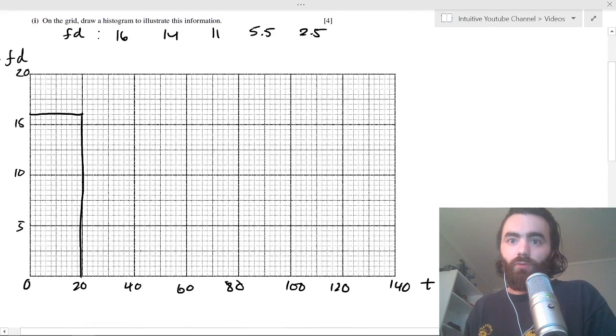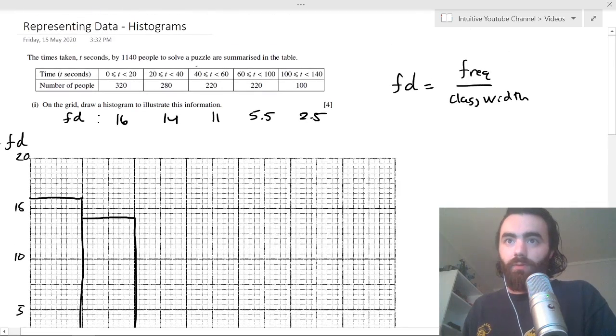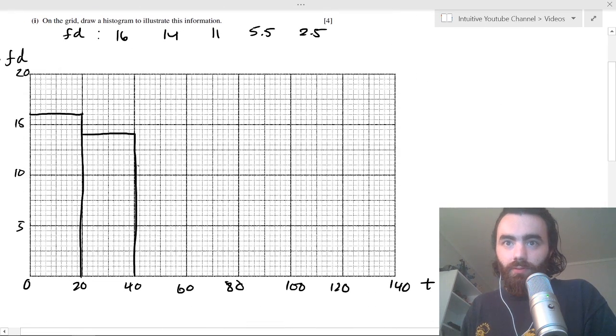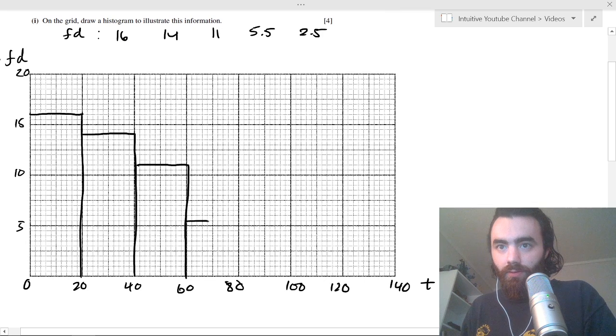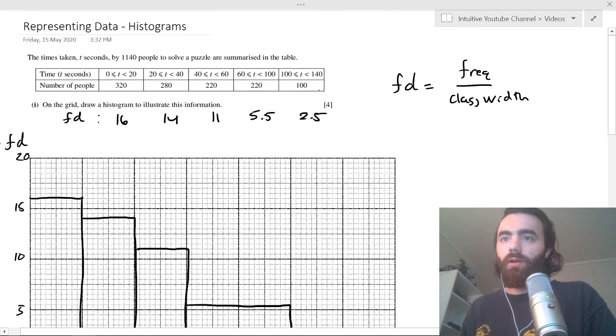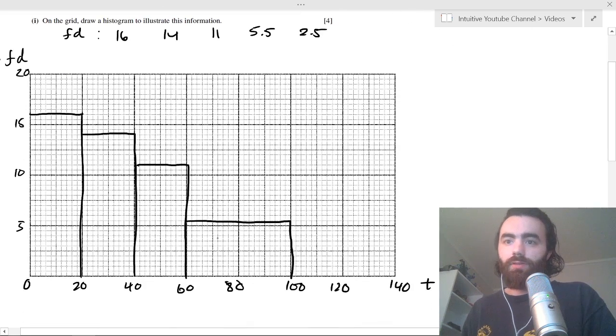And I picked 0.5 because I had 0.5 as my smallest thing here. So the next one will be for 14, between 20 and 40, so 14 is 2 down here. So that would be your next bar, between 40 and 60 is 11, so 11 is there. And then 60 to 100 is 5.5, so it's here. To 100 is 5.5, and 100 to 140 is 2.5, so 2.5 is this line there.